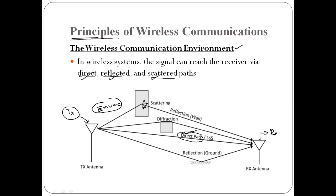This direct path is also called the line-of-sight (LOS) path. Another path is the reflected path, where the wave hits the ground or a body and reflects toward the receiver — this is called the ground reflected wave.